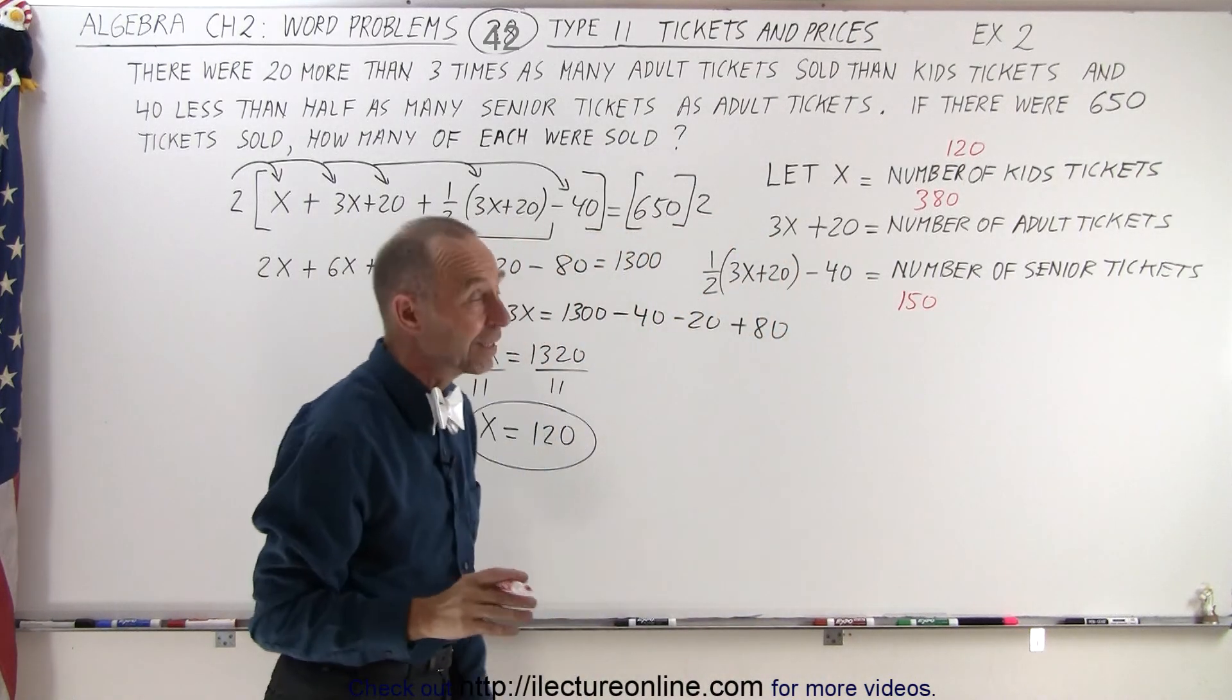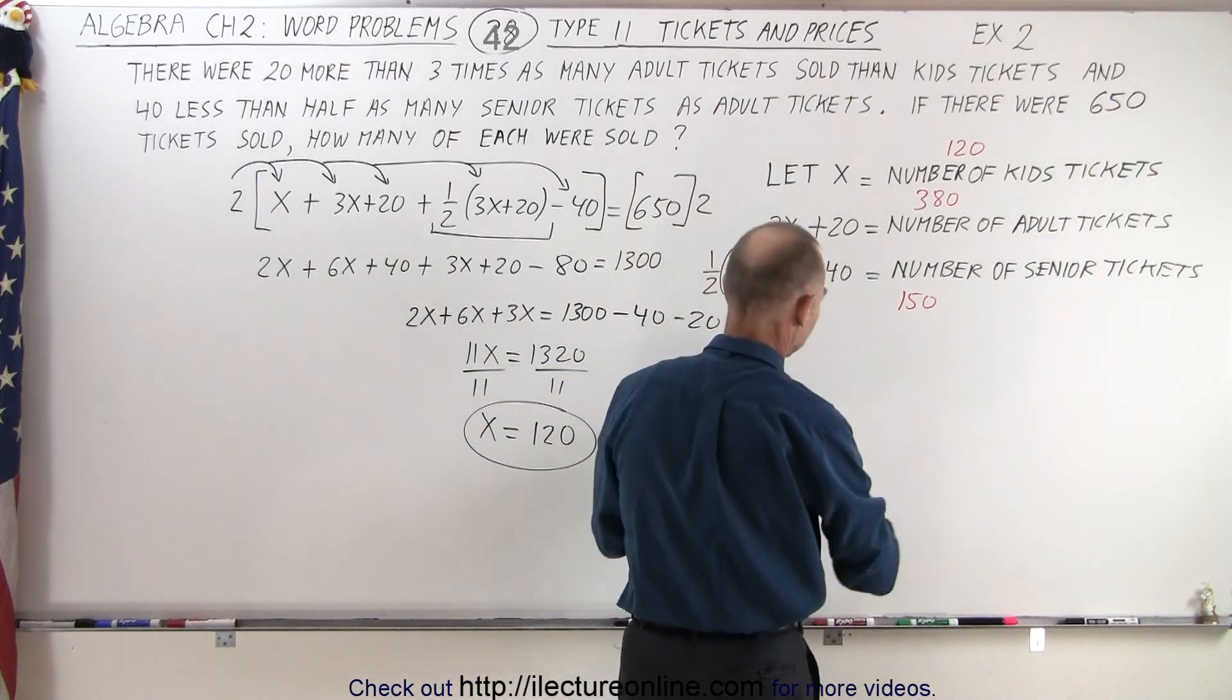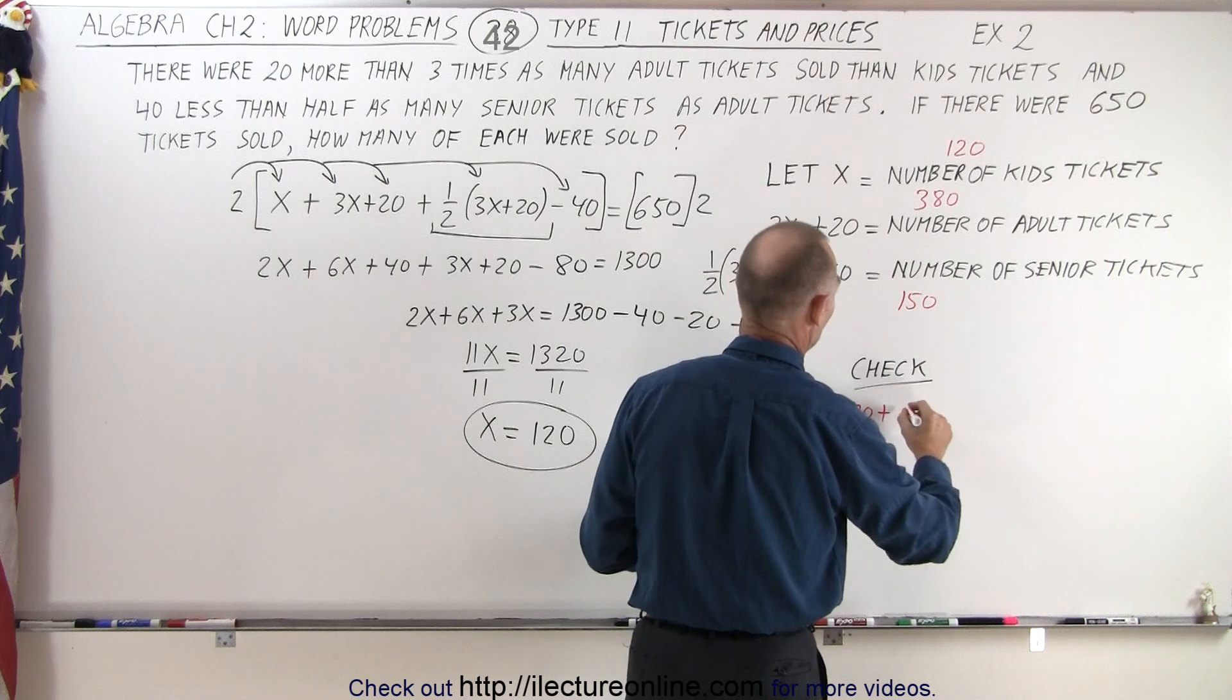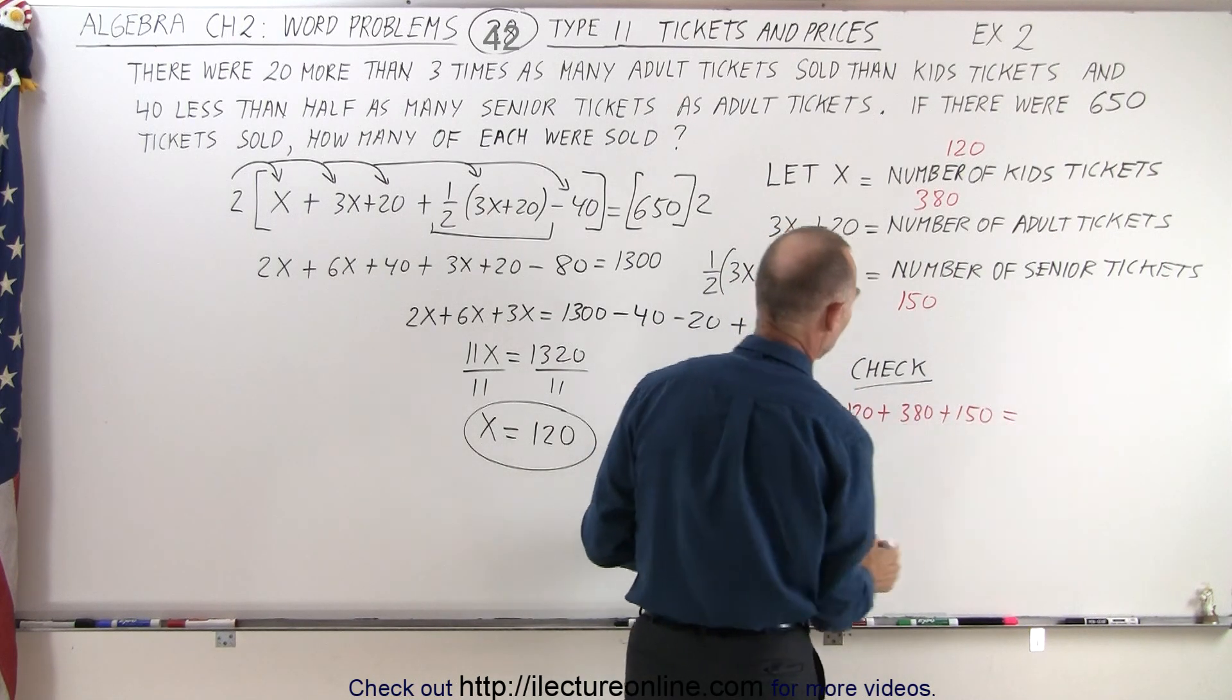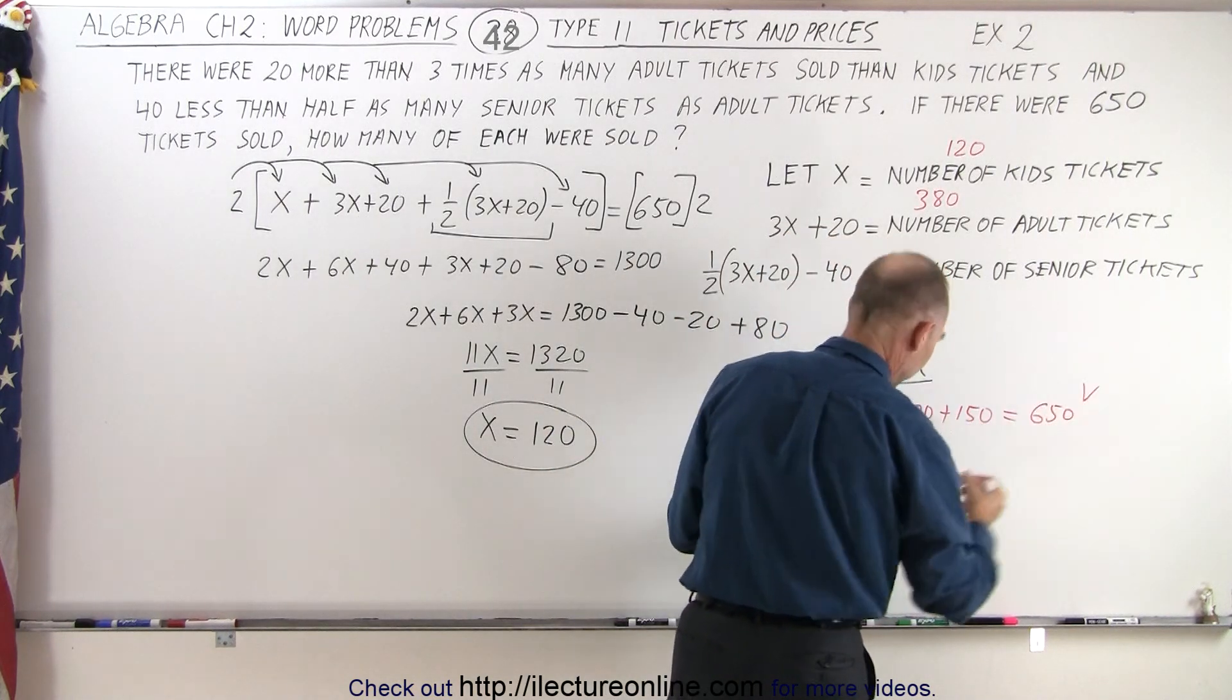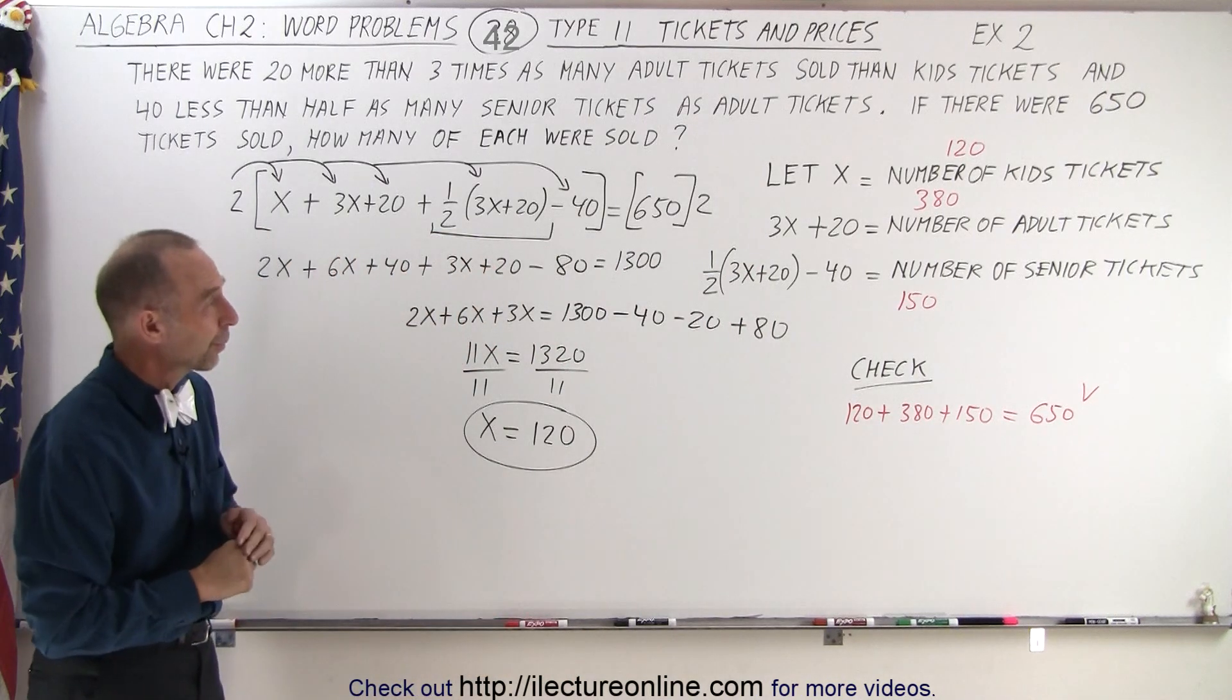Now hopefully those three together should add up to 650, so let's check. We have 120 + 380 + 150. What does that equal? That's 500 + 150 is 650, and sure enough, that's the total number of tickets sold. So we know that we did it correctly.